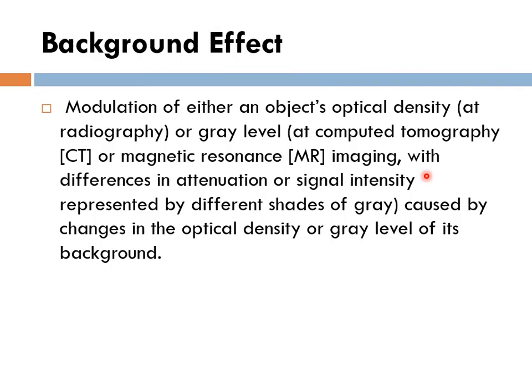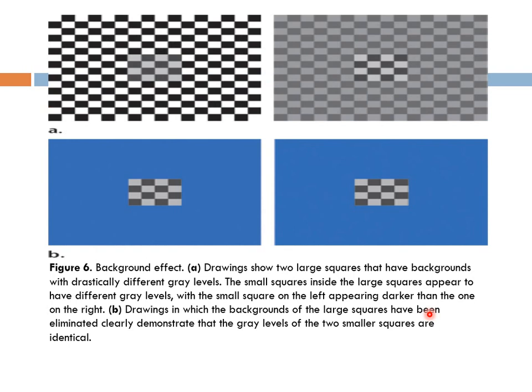We have another phenomenon called the background effect. It's seen on X-ray, CT, and MRI. It is a modulation of an object's optical density or gray level, with differences in attenuation or signal intensity represented by different shades of gray. For example, we have two large squares composed of many small squares. Because of the difference in the gray level of the background, in image A they seem to be different shades. But when we eliminate the background in image B, we see they have the same gray level — there is no difference between them.